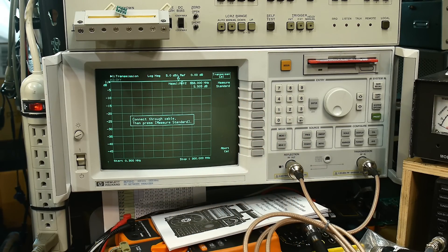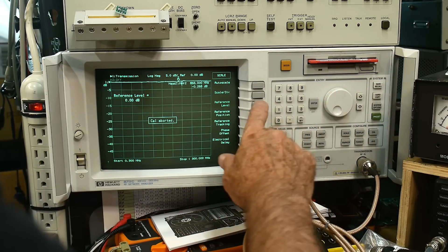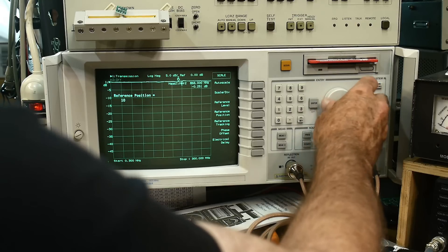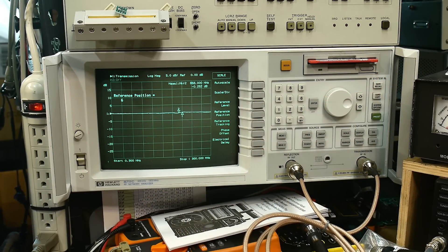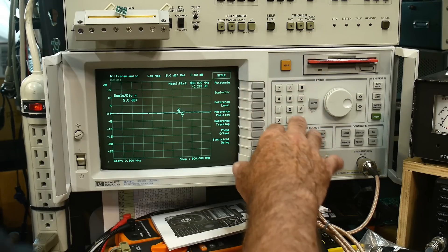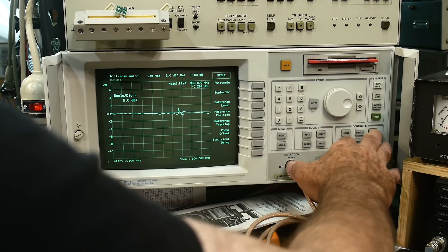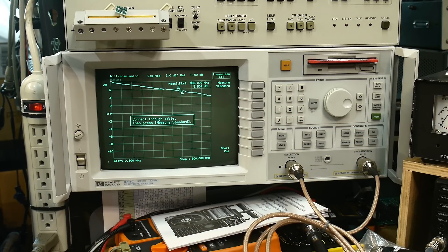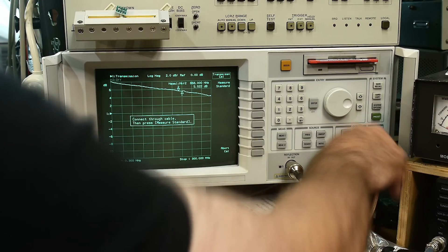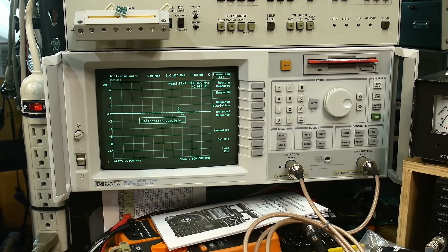And we will set the reference position to maybe in the middle. There we go, and we'll do a scale of, I don't know, let's say 2dB per division. Let's do a cal again. Connect through cable, and there we go. Look at that straight, straight, straight line.